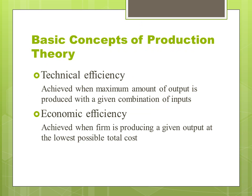Basic concepts of production theory: Technical efficiency is achieved when the maximum amount of output is produced with a given combination of inputs — such as combinations of capital and labor. By using different pairs of capital and labor we achieve maximum output. Economic efficiency is achieved when a firm is producing a given output at the lowest possible total cost — that is the firm's goal.